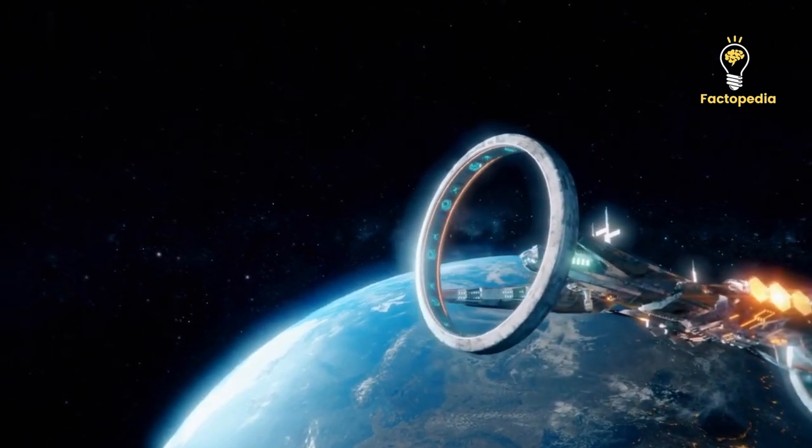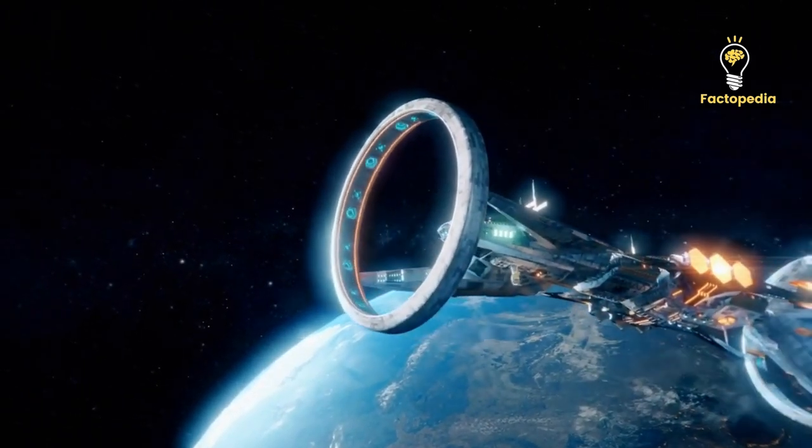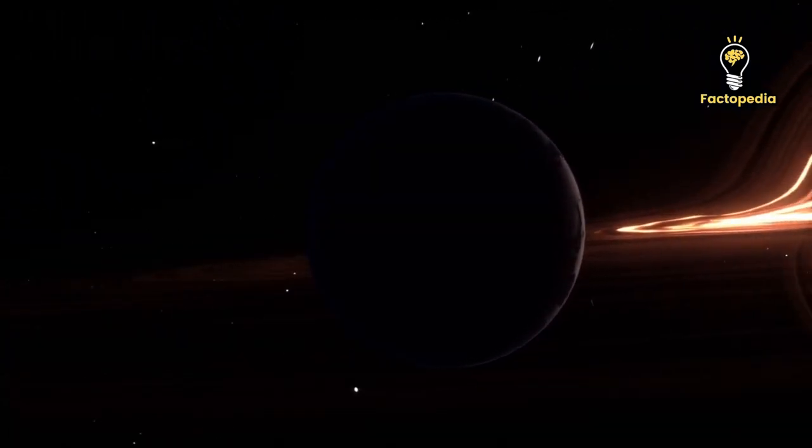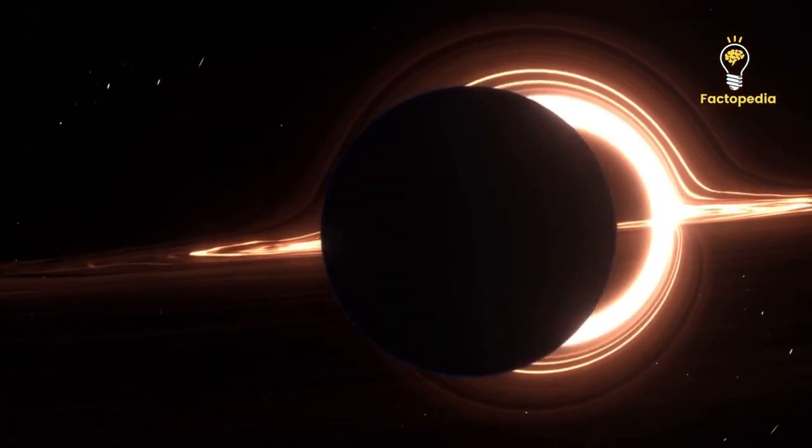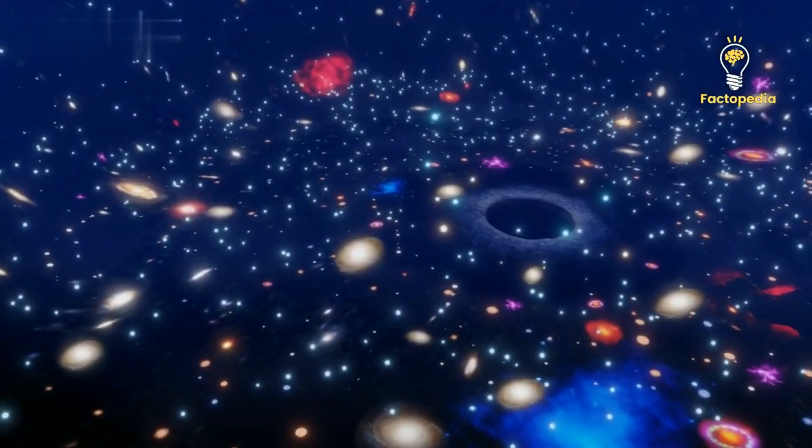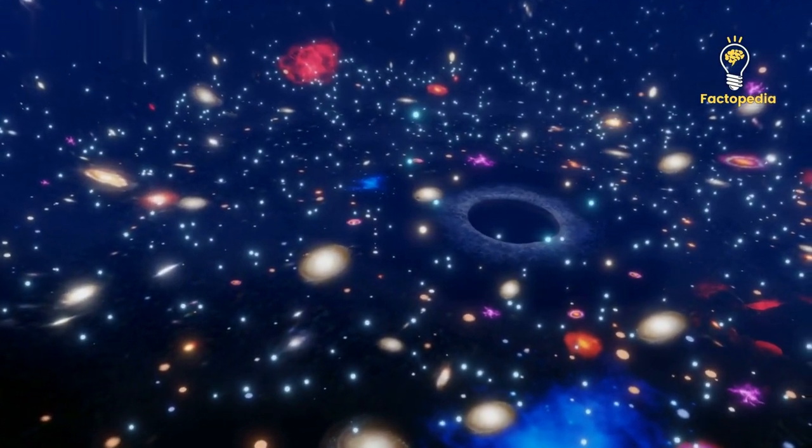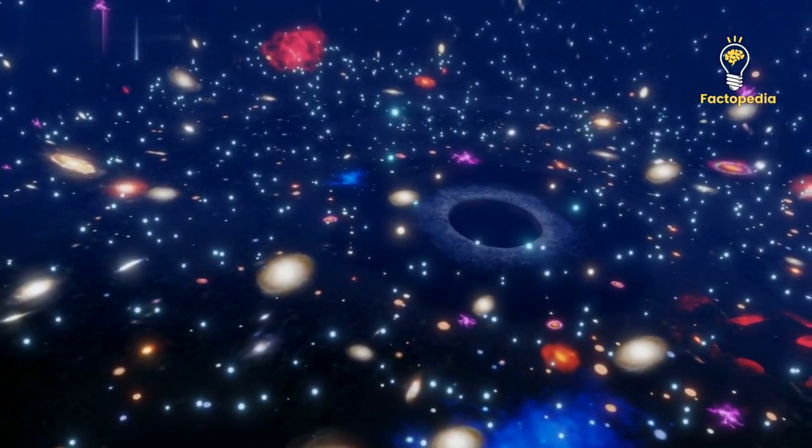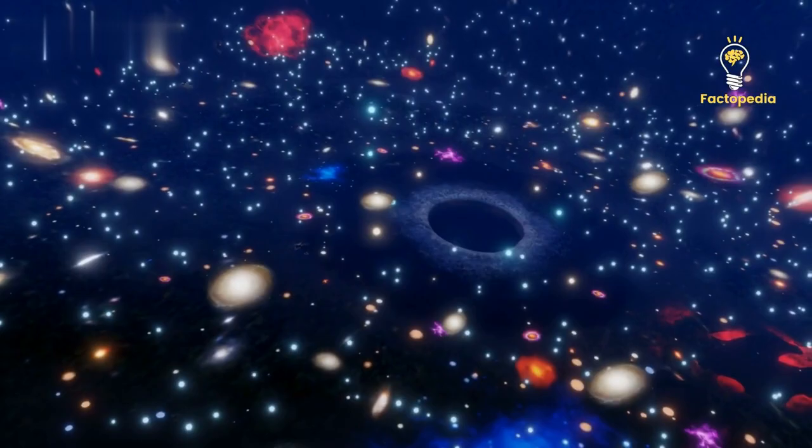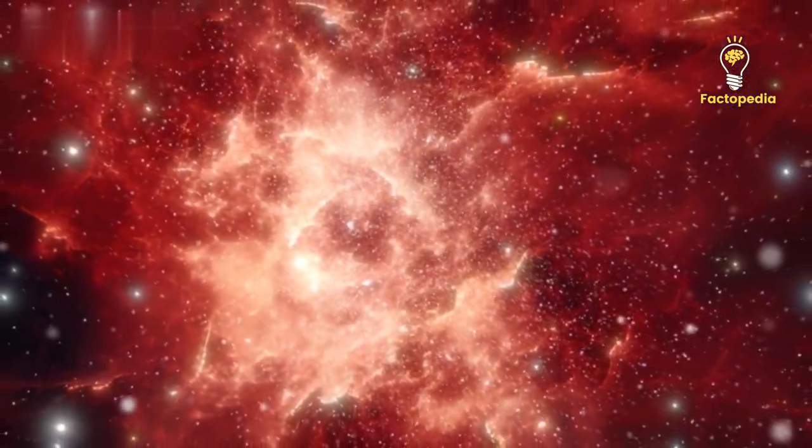Scientists have recently made an astonishing discovery in our cosmic neighborhood: evidence of an exceedingly rare missing link black hole. This intriguing find unveils an intermediate black hole located approximately 6,000 light years away within the Messier 4 star cluster.